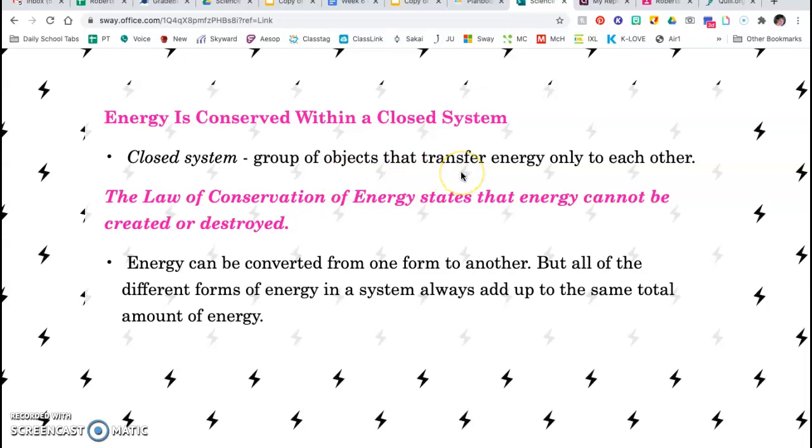In the roller coaster, we had a closed system. That means it's a group of objects that transfer energy only to each other. Energy can be converted from one form to another, but all of the different forms of energy in a closed system always add up to the same total amount of energy, because energy cannot be created or destroyed - it changes forms.